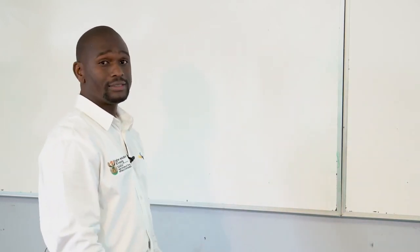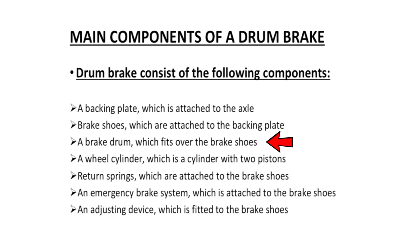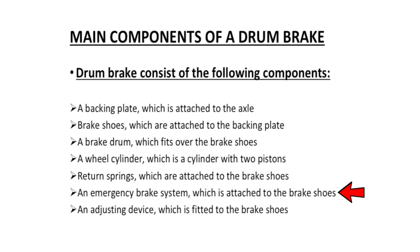Main components of a drum brake: a backing plate which is attached to the axle, brake shoes that are attached to the backing plate, a brake drum which fits over the brake shoes, a wheel cylinder which has two pistons, a return spring attached to the brake shoe, an emergency brake system attached to the brake shoe, and an adjusting device attached to the brake shoe.